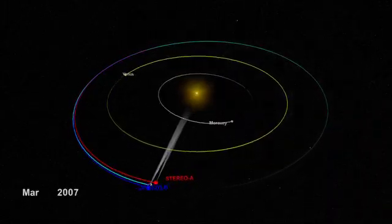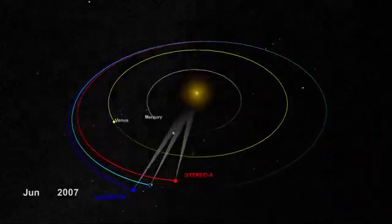In 2006, NASA launched the Solar Terrestrial Relations Observatory, or STEREO, spacecraft.